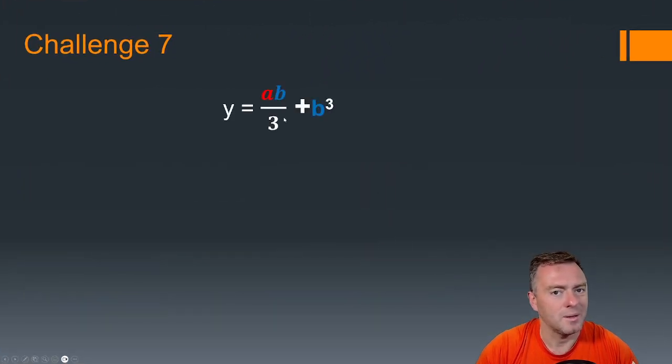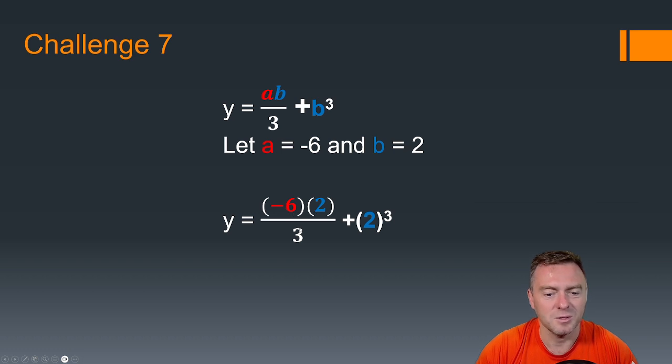This one here, we've got ab ÷ 3 + b³. So we've got a = -3, b = 2. So we've got -6 times 2 ÷ 3, and then plus 2³. So this becomes -12 ÷ 3 + 8, which then gives us -4 + 8, which then gives us 4.